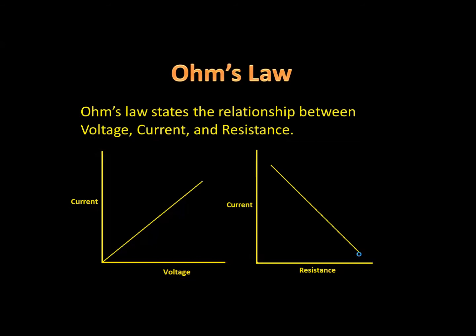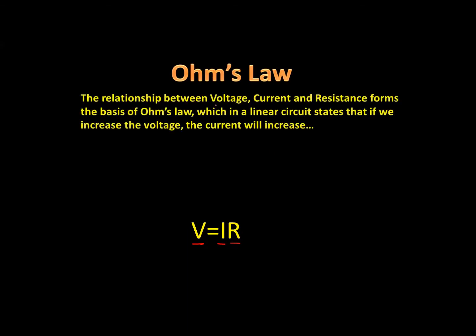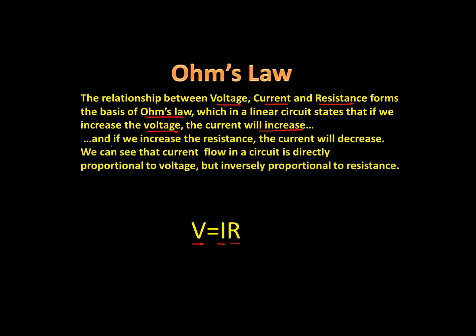Here is our equation for Ohm's law: V equals I times R — voltage equals current times resistance. Voltage in volts is equal to current in amperes times resistance in ohms. In a linear circuit, when voltage increases the current will also increase, and if we increase the resistance the current will decrease.